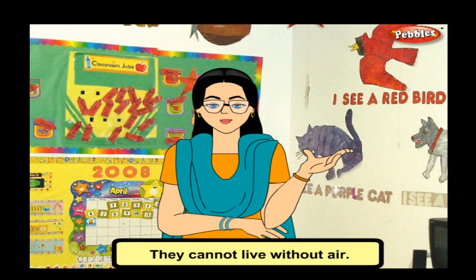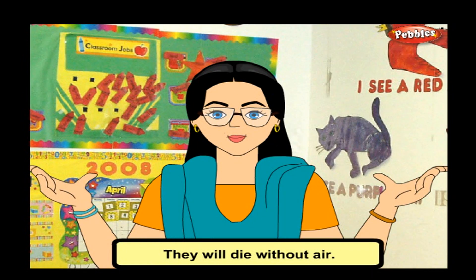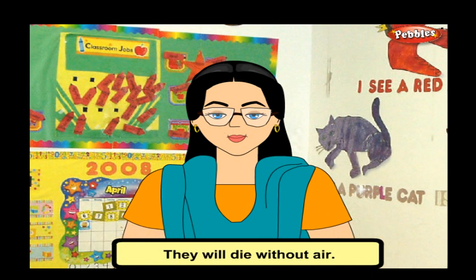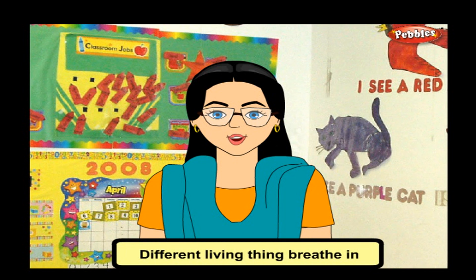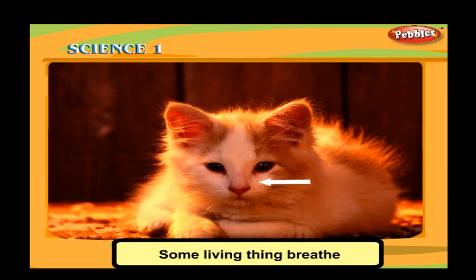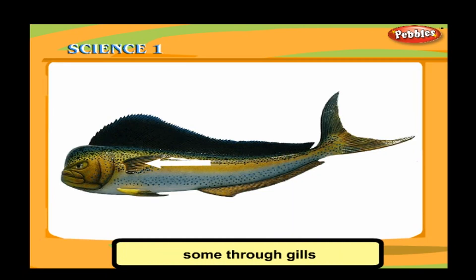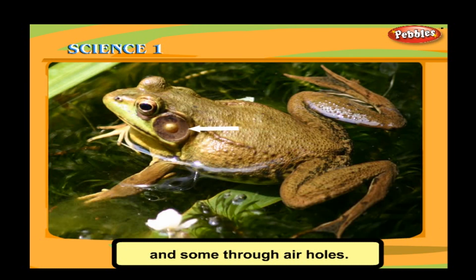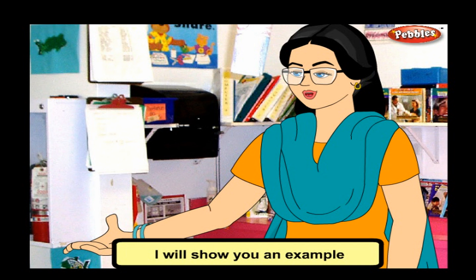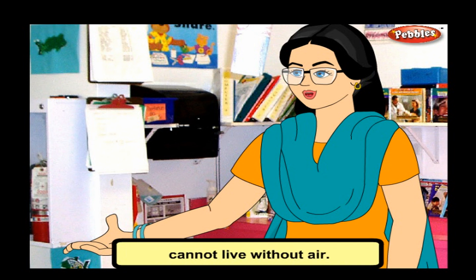All living things need air to live. Human beings, animals, and plants breathe in air — they cannot live without it. They will die without air. Different living things breathe in air through different organs: some through lungs, some through gills, and some through air holes.